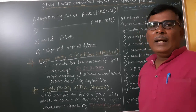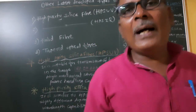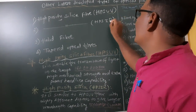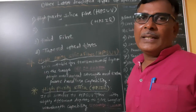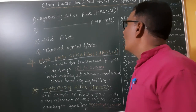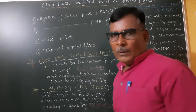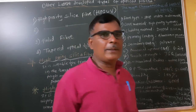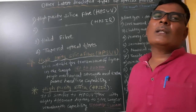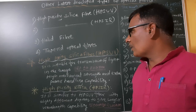A similar type of fiber is HPSIR — high purity silica infrared fiber. The third one is the halide fiber and the fourth one is the tapered optical fiber. These are the four important latest developed optical fibers.